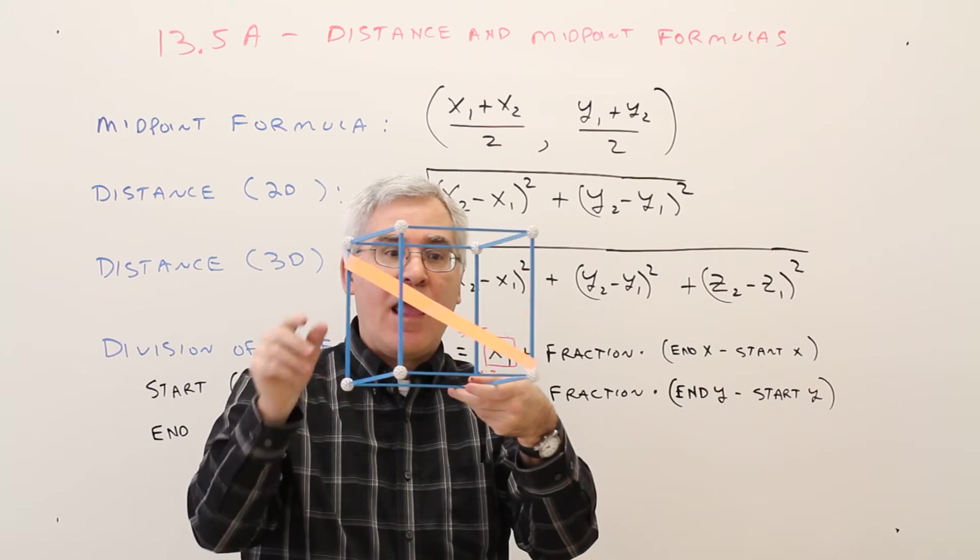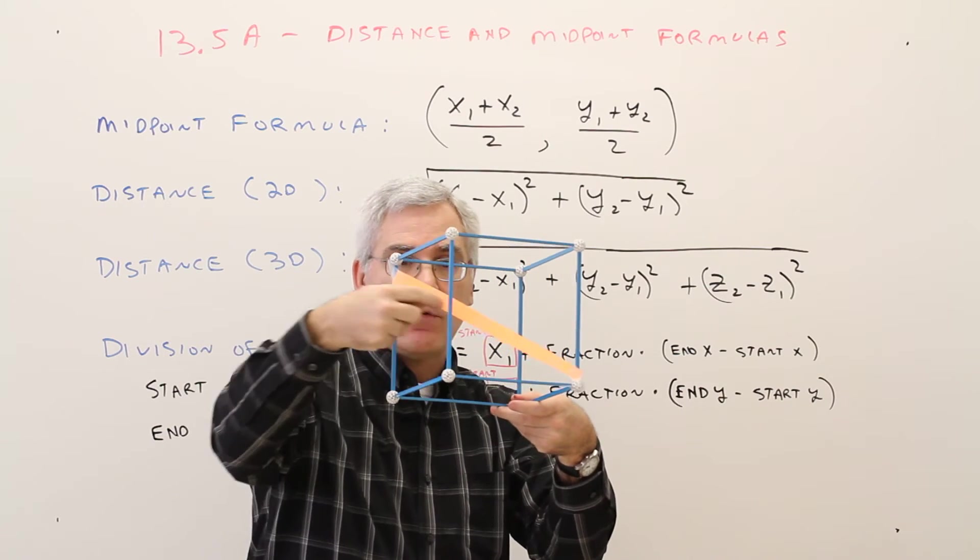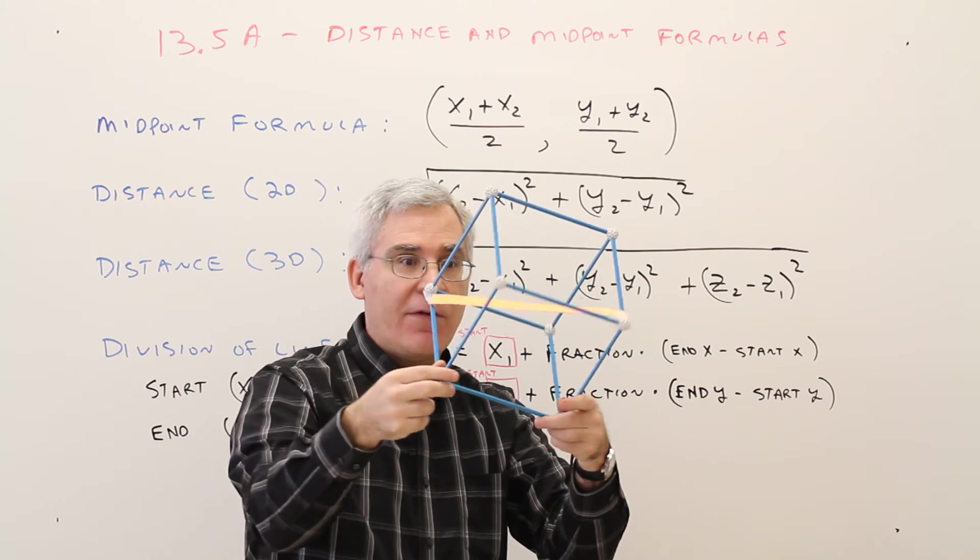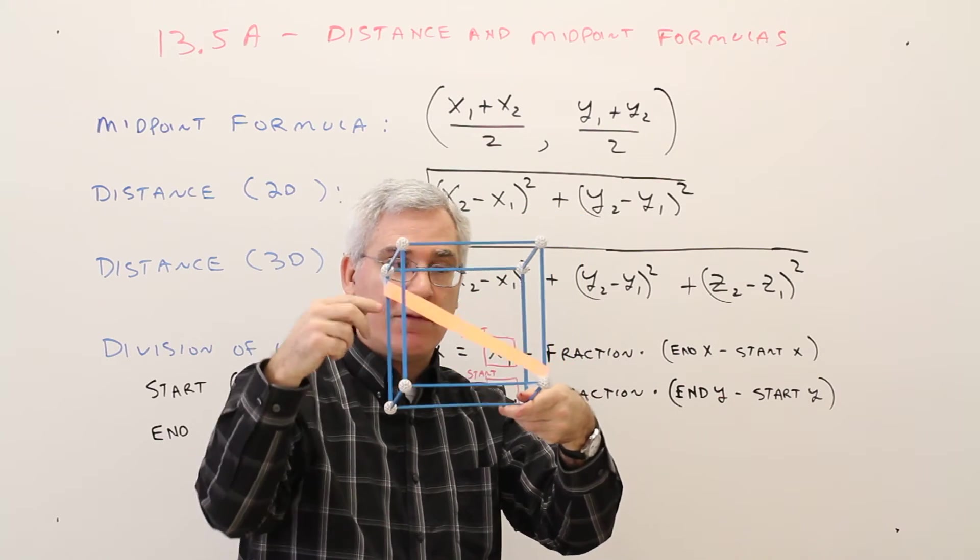And just to show you what that could look like, this would be a three-dimensional distance going across here. If I had just something in a plane, that would be two dimensions, but this is three.